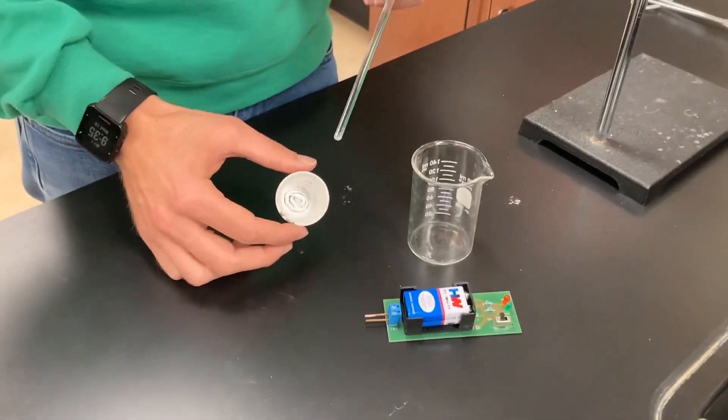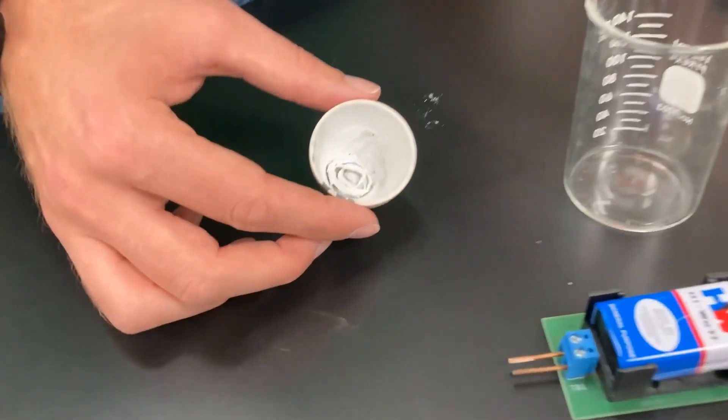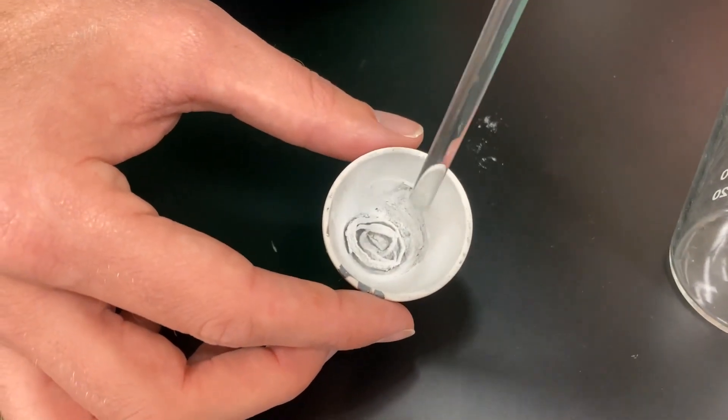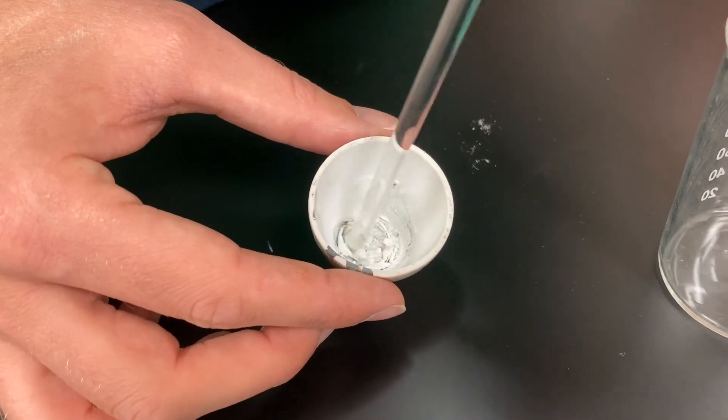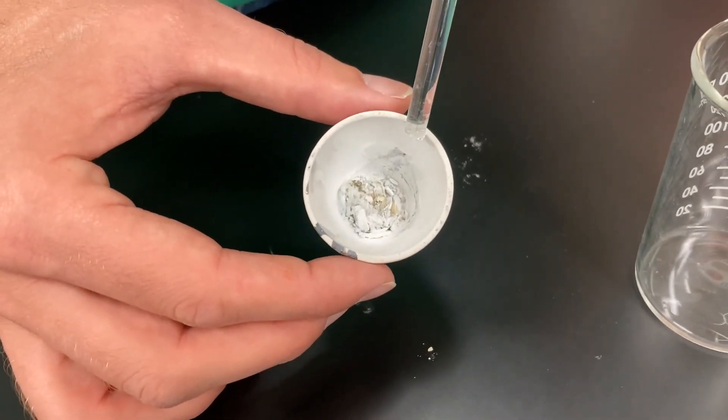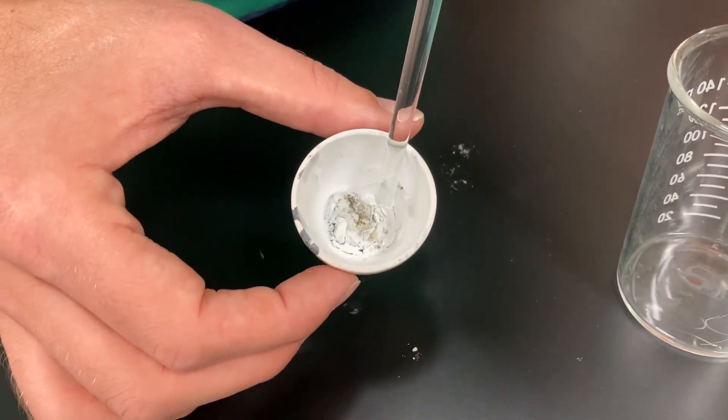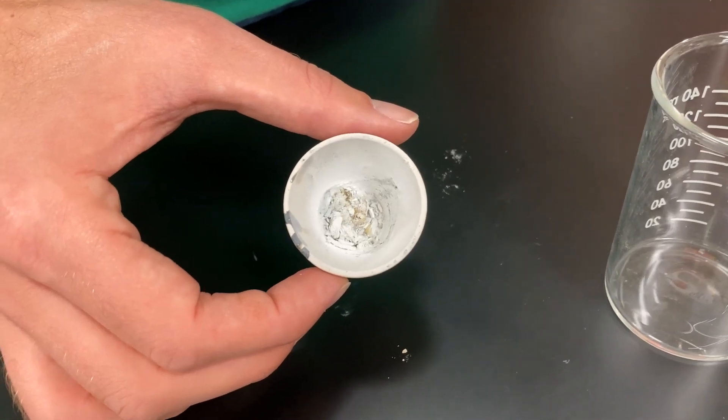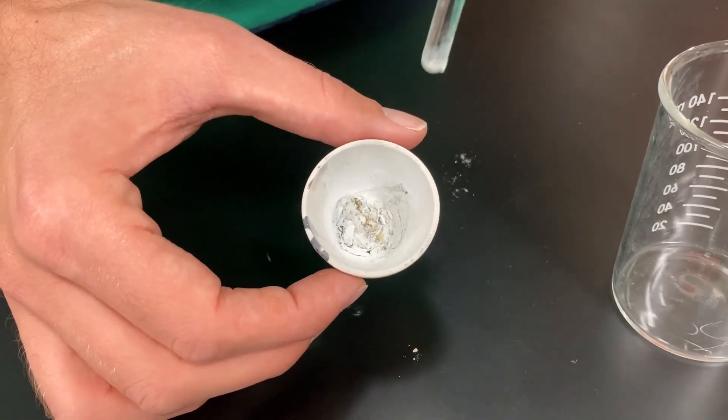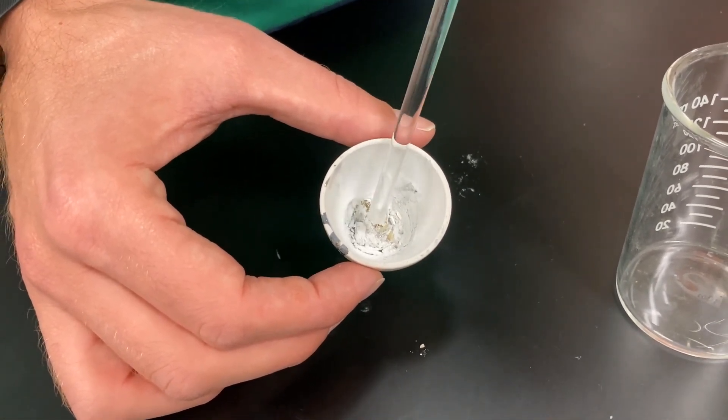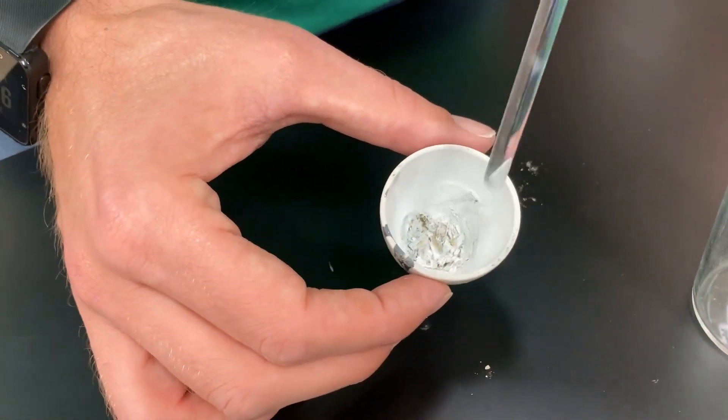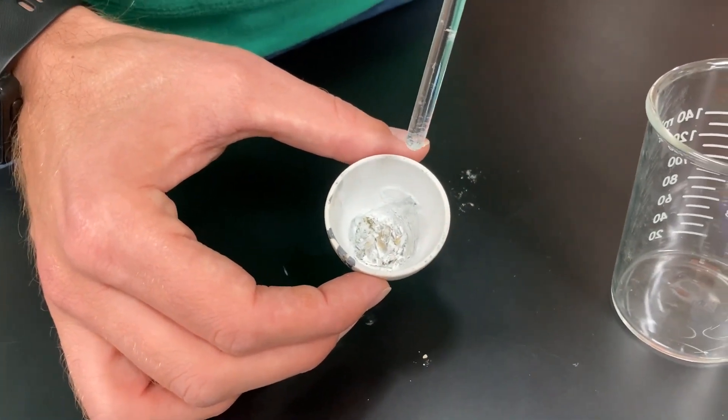So after a sufficient amount of time we've given our crucible a chance to cool. Again, inside the crucible you can tell that we have this white now brittle solid. You might even notice that there's little flecks of yellow that are inside of there. Those would correspond to the magnesium nitride that has been formed. Our primary product is that white brittle solid. That's the magnesium oxide.